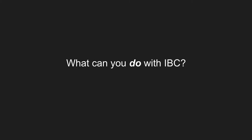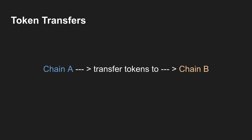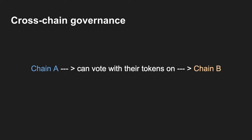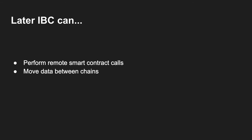So what can you do with IBC? This is the biggest question. Some of the first examples include token transfers — if you're on Chain A and you want to transfer tokens to Chain B, you can do that. If you're a token holder of Chain A and you delegate your tokens to validators on Chain A for staking rewards, you may be able to delegate your tokens to validators on Chain B for staking rewards. And if you're voting on proposals on Chain A, you may be able to vote on Chain B. Later, IBC can perform remote smart contract calls and move data between chains.